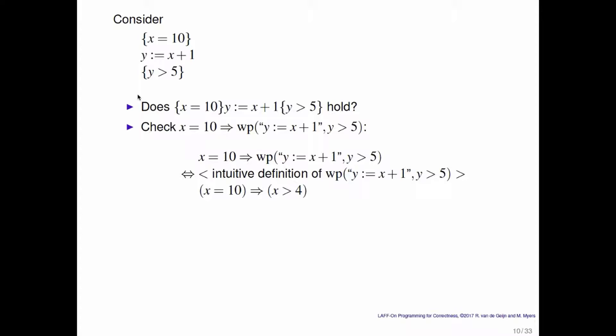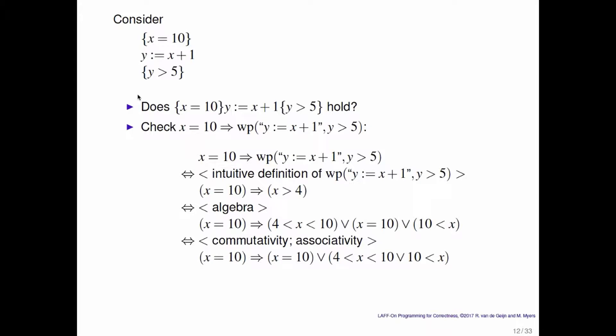You can look at it intuitively and just move on, or you can formally prove it. Through some algebra you can take x greater than 4 and separate it into three different regions: the case where x is between 4 and 10 (not including 4 and 10), the case where x equals 10, and the case where x is greater than 10. You can then shuffle things around using commutativity and associativity, isolating x equals 10 on the left. Then the weakening/strengthening laws confirm this is actually true, proving the Hoare triple is correct.